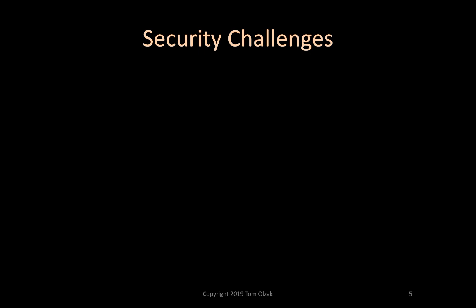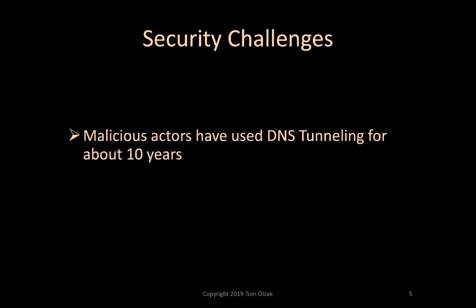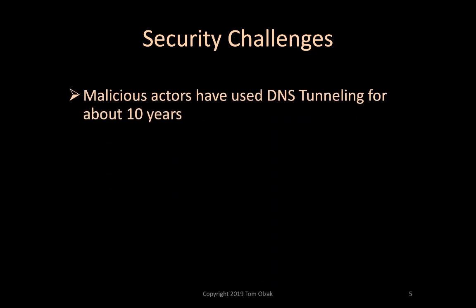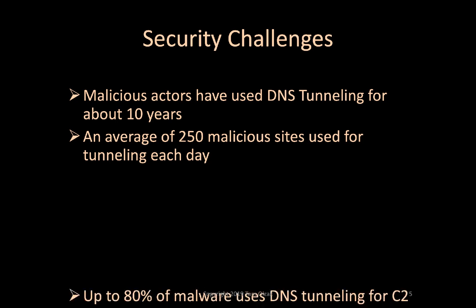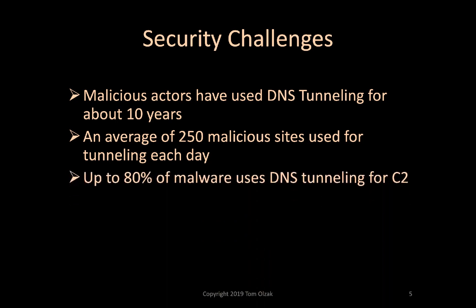MA have used DNS tunneling for about 10 years. As security professionals block or heavily control other channels like HTTPS, the use of DNS tunneling is increasing. In its 2019 threat report, CenturyLink writes that an average of 250 malicious domains are used for tunneling every day. In other research, Palo Alto Networks Unit 42 found that up to 80% of malware uses DNS to establish C2.